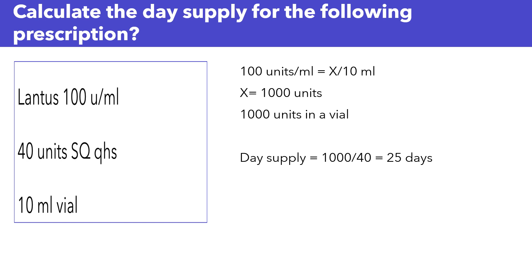How many units of insulin are in a 10 ml vial? To calculate that, we can use a ratio and proportion. We know that Lentis is available as 100 units per ml, and you're dispensing a 10 ml vial, so you can set up your proportion.